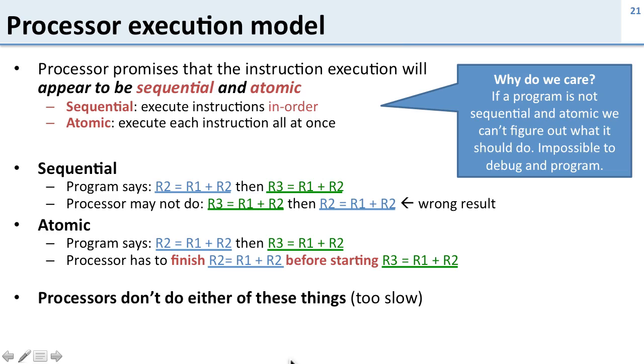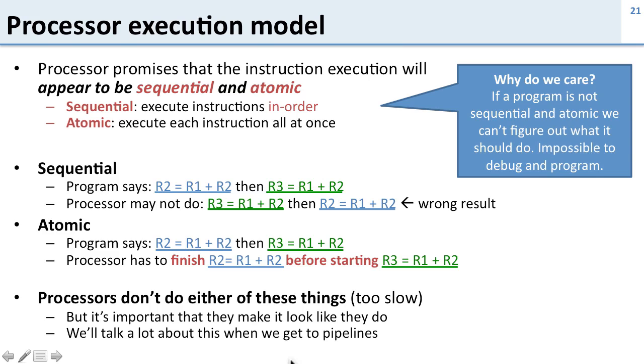The reality is that processors don't do either of these things because they're too slow. So processors break both of these rules but they have to clean it up. They spend a lot of time trying to make it look like you ran the program this way, and you're going to learn a lot about this when we get to the lecture on pipelining.